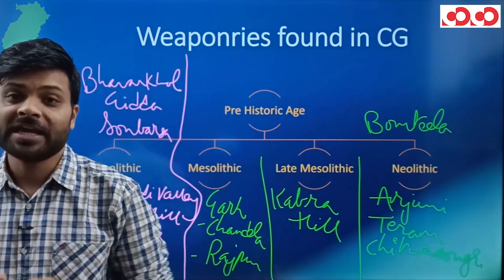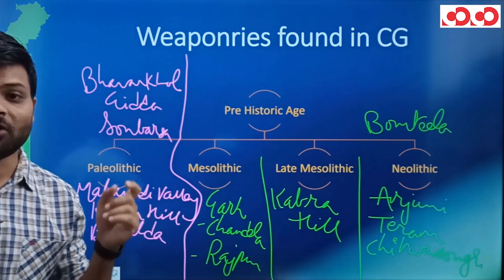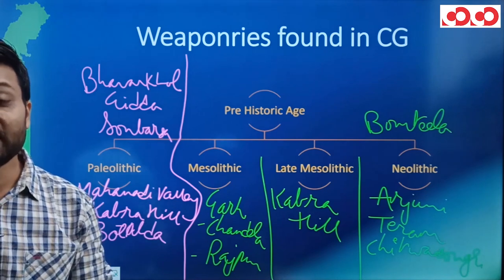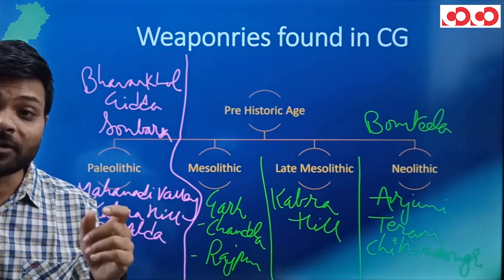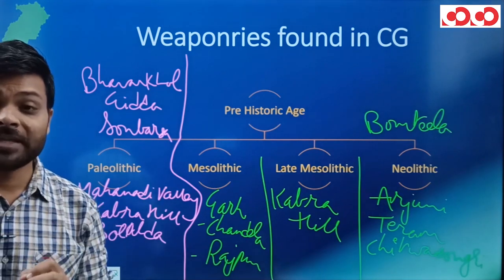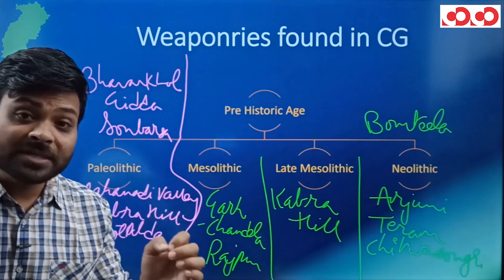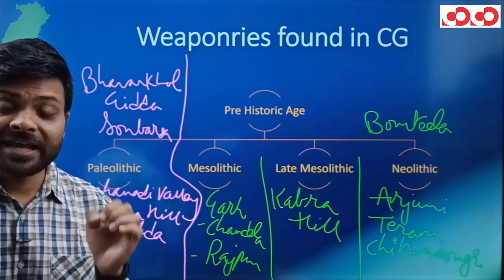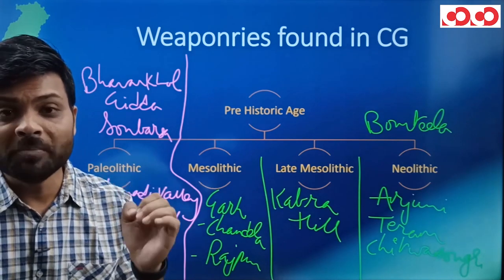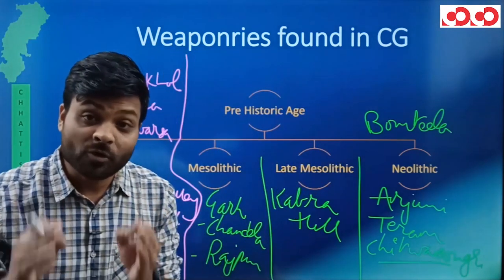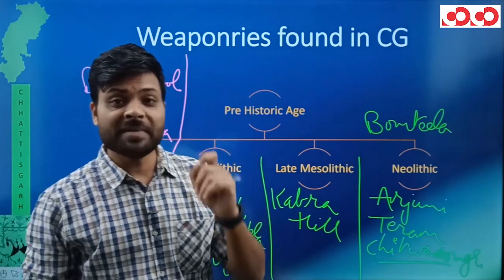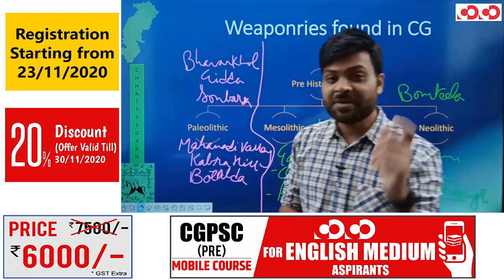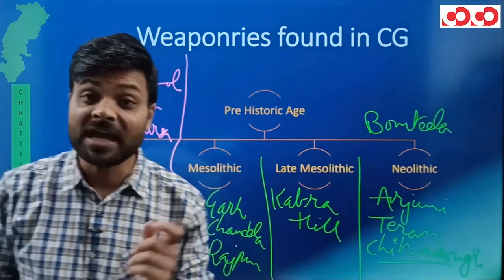Summary: Paleolithic age में देखा — Mahanadi Valley, Kabra Hill, Botalda, इसके अलावा Bhavar Khol, Giddha और Son Barsa। Mesolithic age में देखा — Gad Chandela और Rajpur। Late Mesolithic में देखा — Kabra Hill। और finally Neolithic age में देखा — Arjuni, Teram, Chitwa Dongri और Bom Tila। तो यह था Chhattisgarh में prehistoric age के findings — जिसमें हमने prehistoric sites भी देखे, weaponries भी देखे, और साथ में megalithic monuments भी देखे।